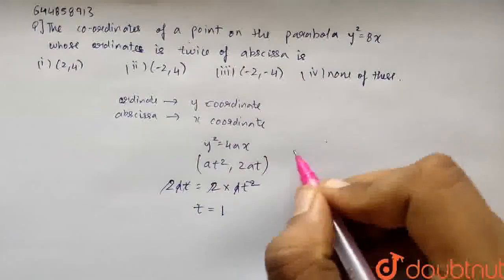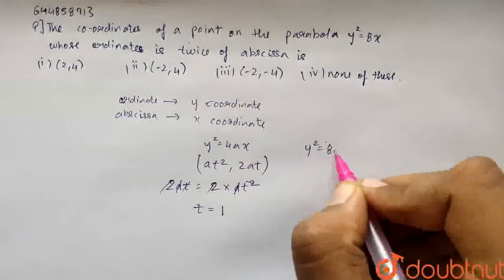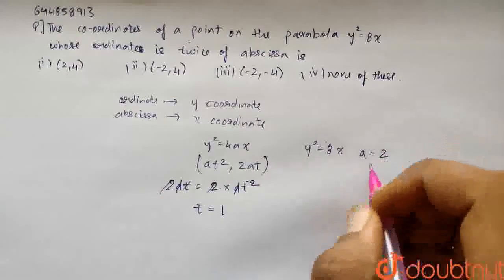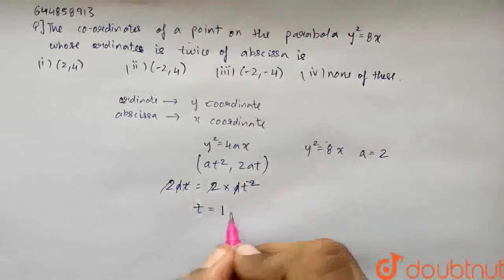In our question, when we compare y² equals 8x with y² equals 4ax, we will get the value of a equals 2. Therefore, the value of a is 2 and t is 1.